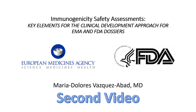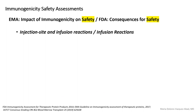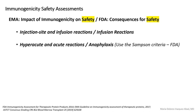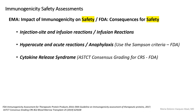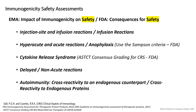In this video we're going to review the guidelines from EMA and FDA that refer to immunogenicity safety assessments. Both guidelines list reactions to follow: hyperacute and acute reactions or anaphylaxis, cytokine release syndrome, delayed or non-acute reactions, and if your drug has an endogenous counterpart, how an immunogenic response to the drug would cross-react with that counterpart. Let's look at the Gell and Coombs classification to put these in clinical context.